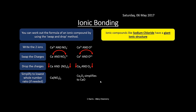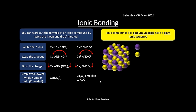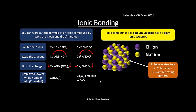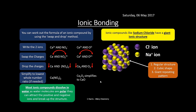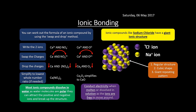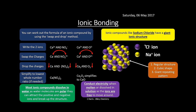Ionic compounds like sodium chloride have giant ionic structures. Here's an example of sodium chloride: the yellow spheres are sodium ions, the purple ones are chloride ions. They pack together in a regular, very cubic, giant repeating pattern. These dissolve in water pretty well — water is polar, so the delta-negative oxygen is attracted to positive sodium ions and the delta-positive hydrogens are attracted to the chloride ions. They also conduct electricity when molten or dissolved in solution because the ions are free to move around, but not when solid as the ions are fixed.